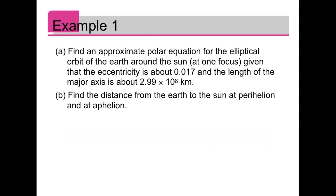Okay, let's do an example. So we're going to find the approximate polar equation for the elliptical orbit of earth around the sun, given that the eccentricity is about 0.017 and the length of the major axis is about 2.99 times 10 to the 8 kilometers. All right, so we have e is approximately 0.017, we have a is 2.99 times 10 to the 8 divided by 2. They give us the length of the major axis, so a is half of that. 2.99 divided by 2 is 1.495, so 1.495 times 10 to the 8.